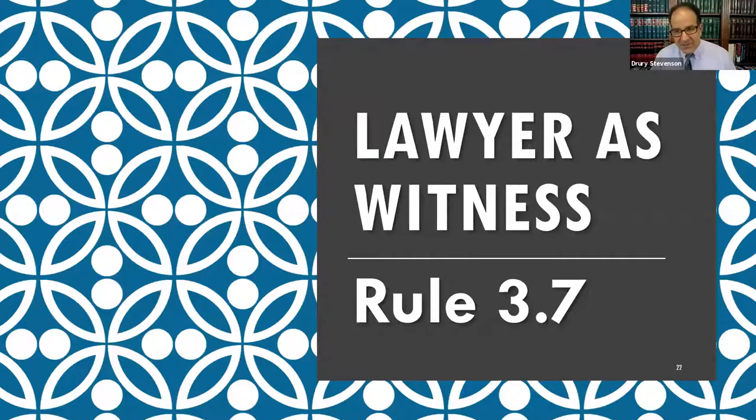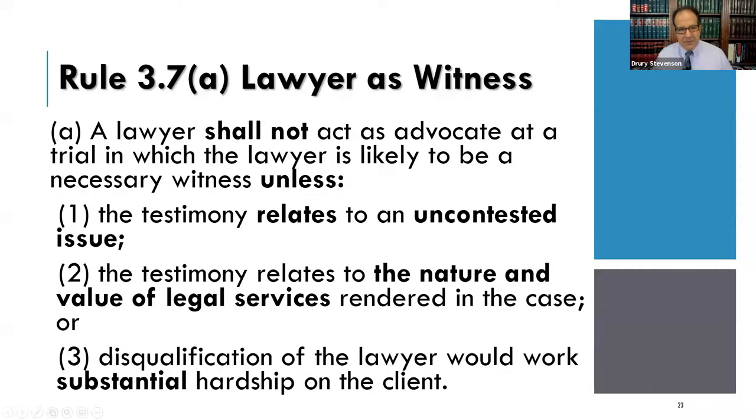This is a lecture about Model Rule 3.7, which relates to lawyers serving as witnesses at a trial where they're also trying to be one of the lawyers or advocates in the case. This is a shorter rule with fewer provisions. It is tested sometimes on the MPRE. It's a pretty straightforward rule, not one of the really complicated ones, and it should be easy to remember.